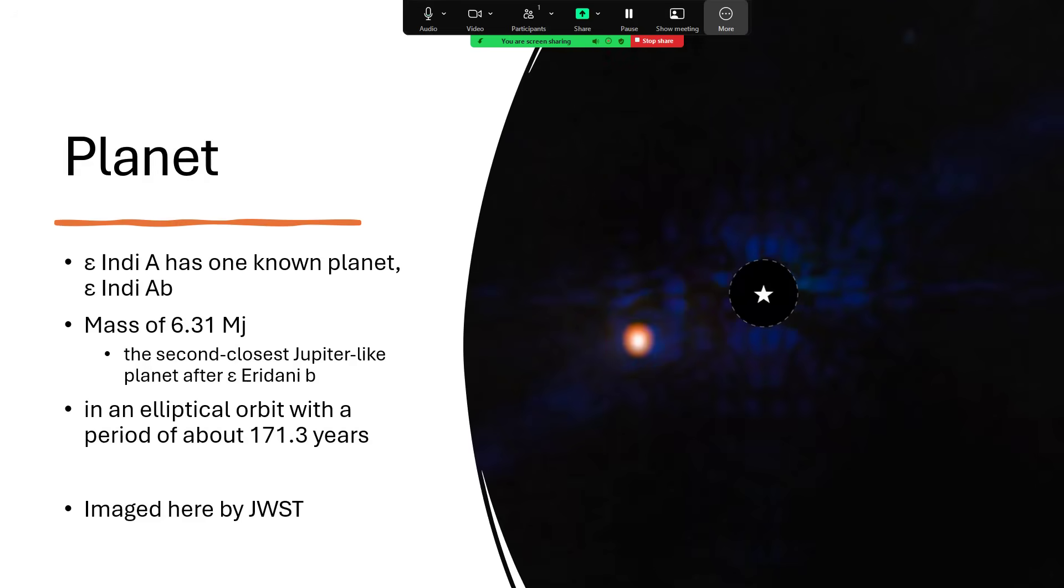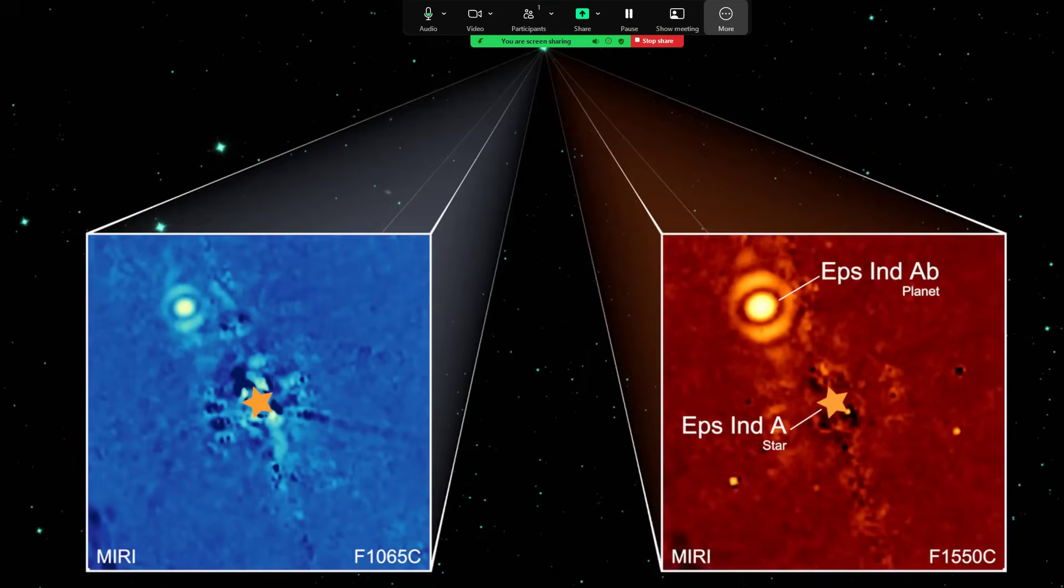Epsilon Indi Ab is in an elliptical orbit taking 171.3 years. And this time it is a James Webb Space Telescope picture. Again, we've blotted out the central star, and the dot there is a direct image of this super Jupiter planet. Got another couple of images in different wave bands.